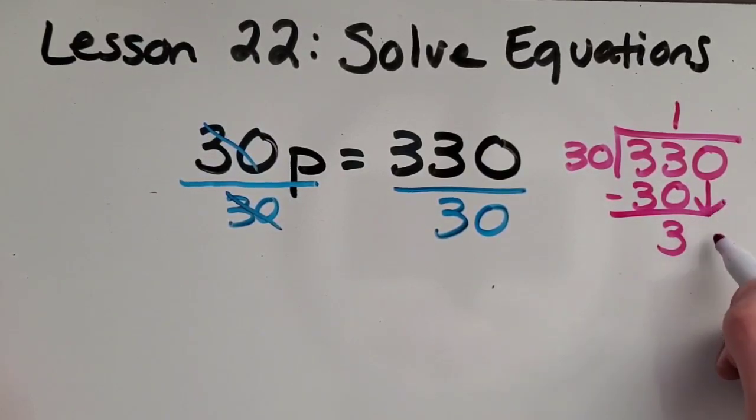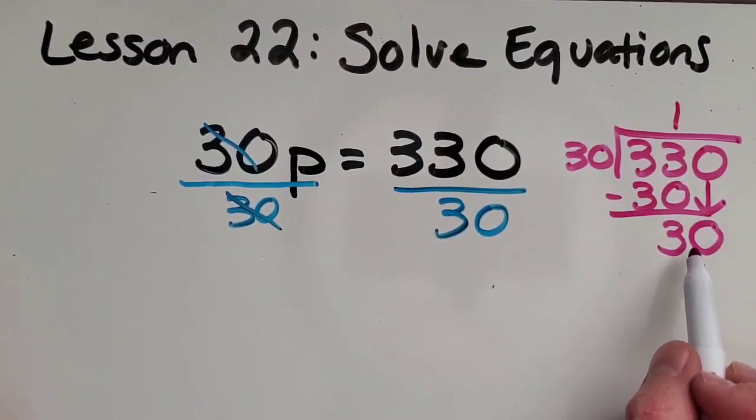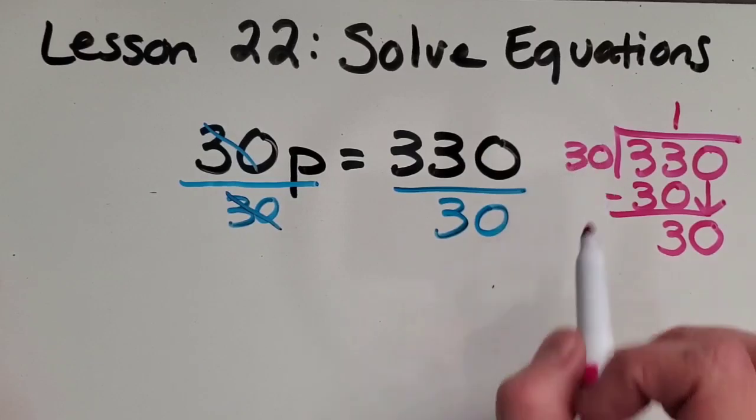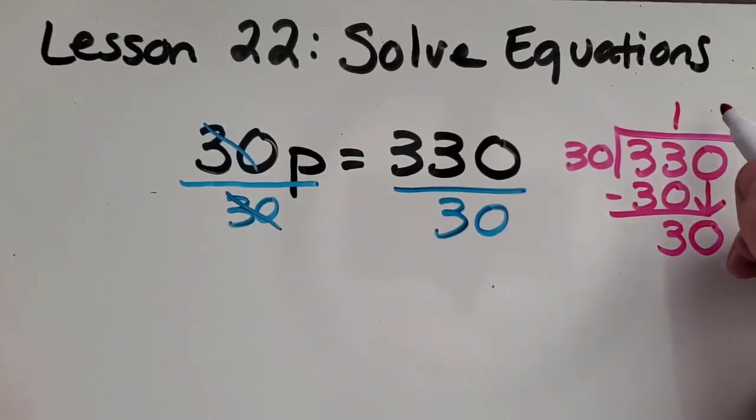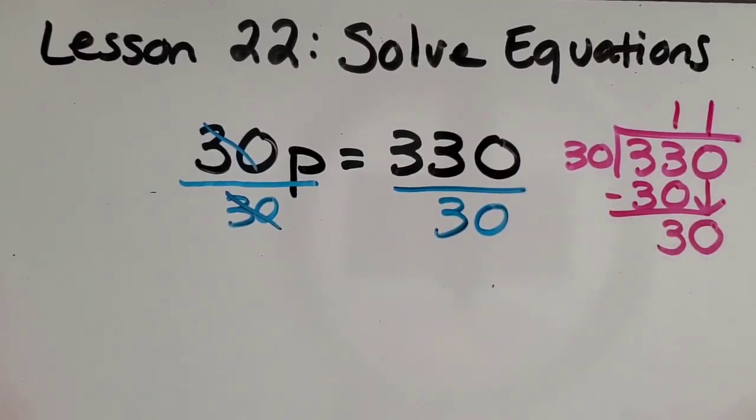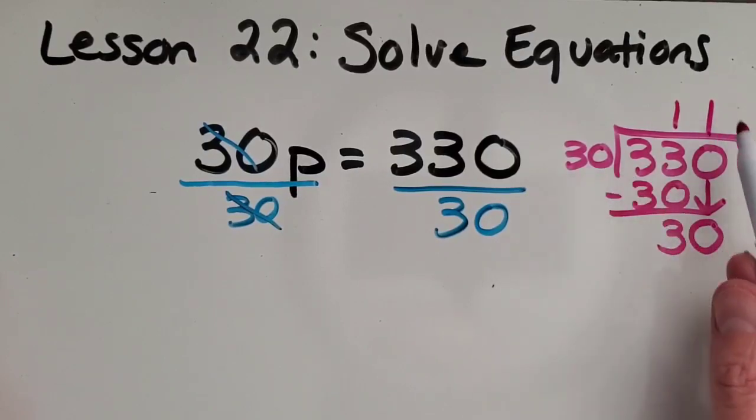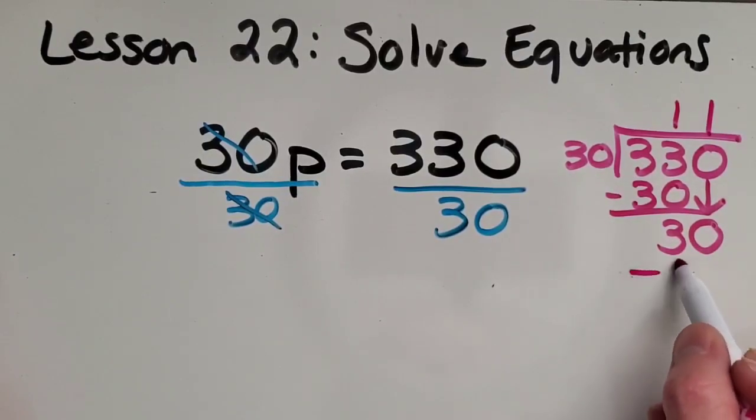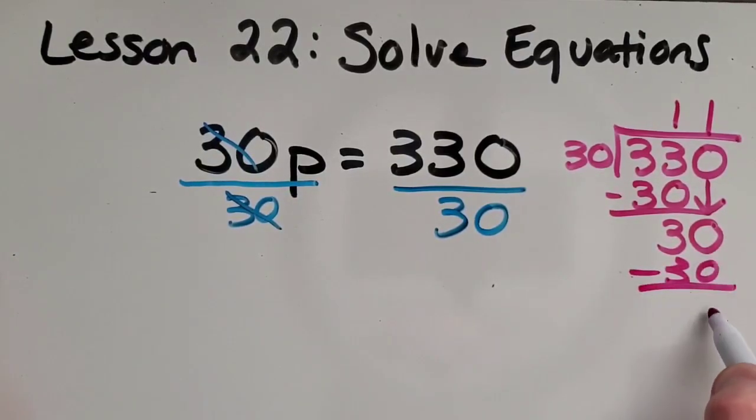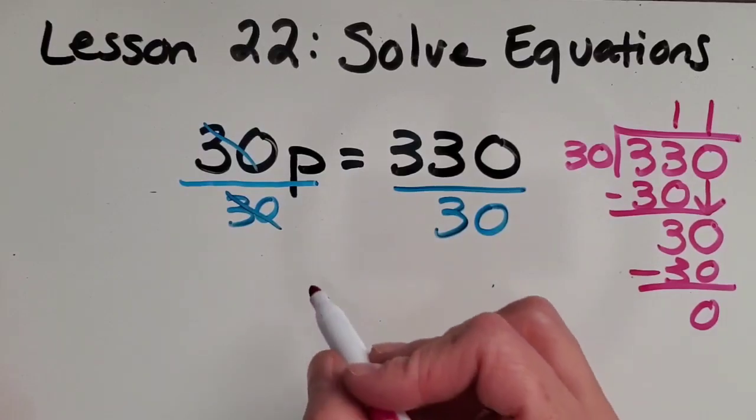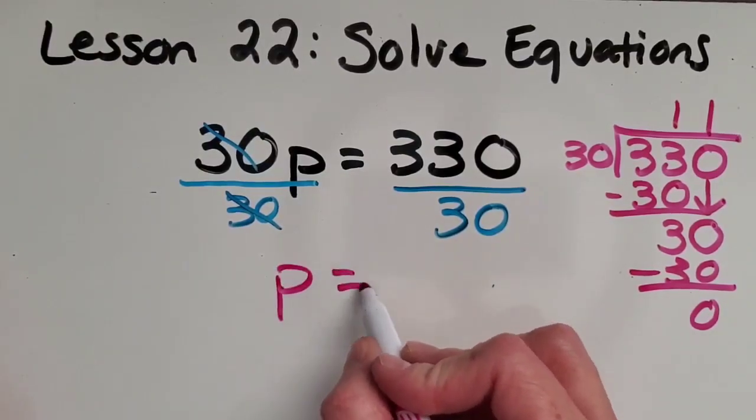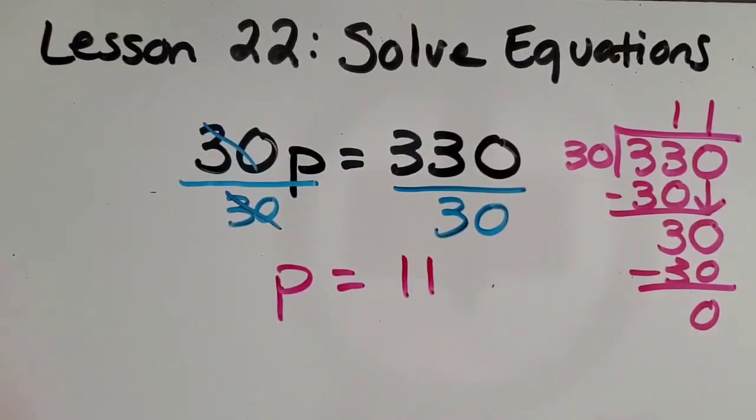Bring down that zero. And then this is nice. I have a 30. And I'm making groups of 30. So I can make exactly one more group. No remainder. Because 30 times one is 30. We're going to subtract. Nothing left to bring down. And the zero means no remainder. So that means that p equals 11. He can pay him $11 per hour.